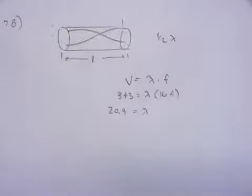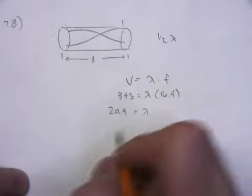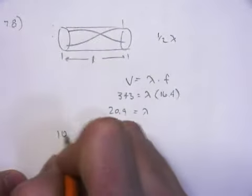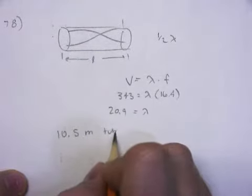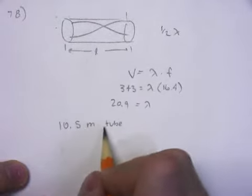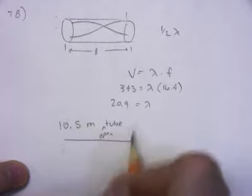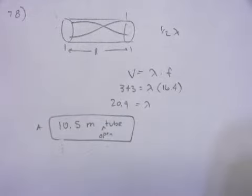This can be half the wavelength, and it will work. So, divide that by 2, and you get 10.5. So, a 10.5 meter tube, I guess I should probably say open, part A. The open tube.